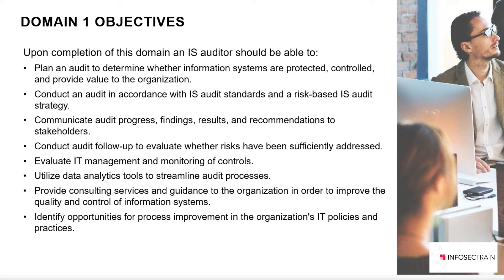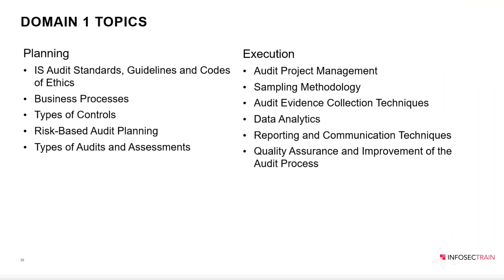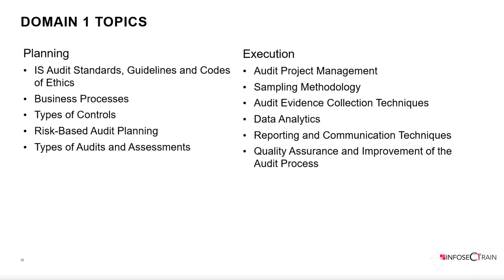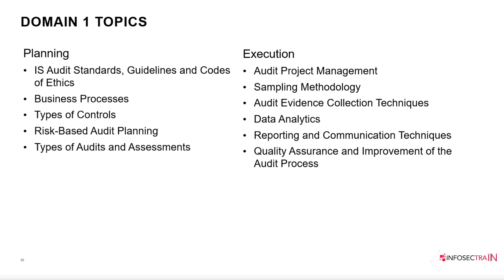The topics in this domain are divided into two parts: planning and execution. In the planning part, we study audit standards, guidelines, and the code of ethics given by ISACA. We also understand various business processes in an organization — HR, finance, procurement, physical security, administration, and operations. We will also look at types of controls, which exist to mitigate risk to business objectives.